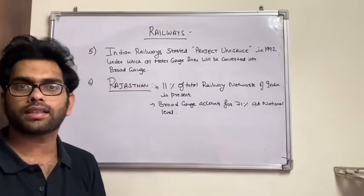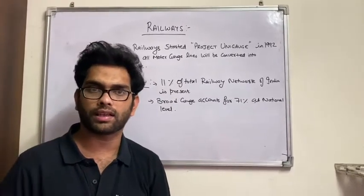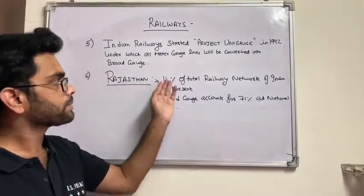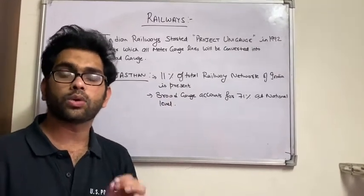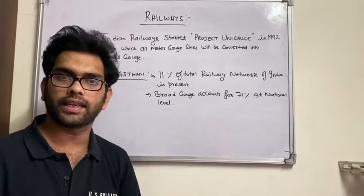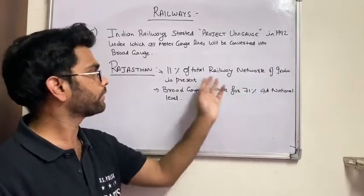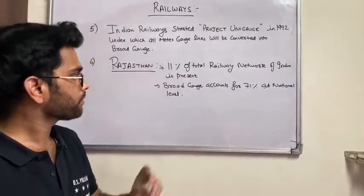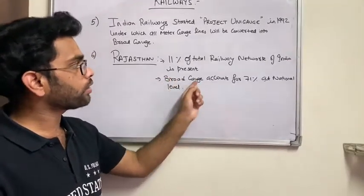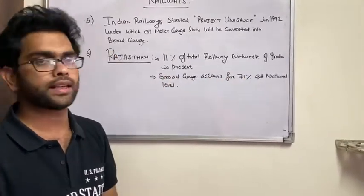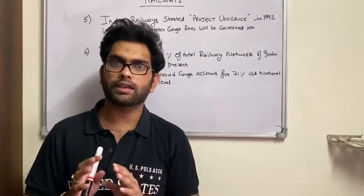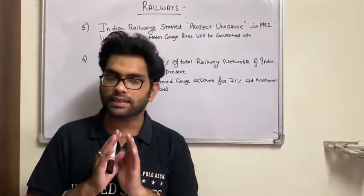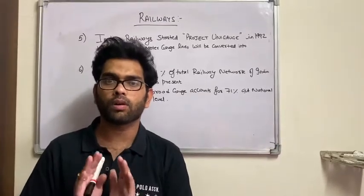Now let us see what is the railway scenario in the state of Rajasthan. Rajasthan is having 11% of the network in the state of Rajasthan and the broad gauge accounts for 71% at national level. If we compare the broad gauge percentage all over the country, then Rajasthan has 71% of broad gauge.